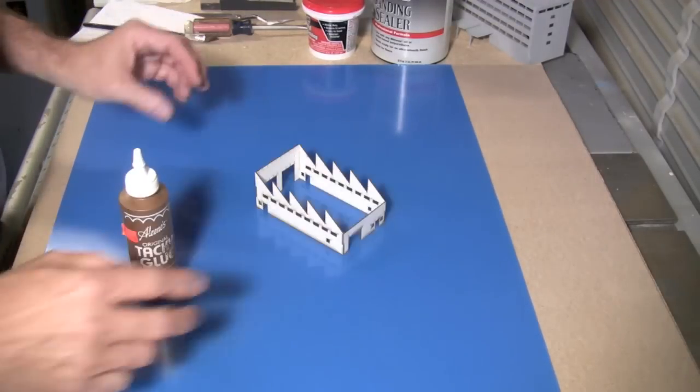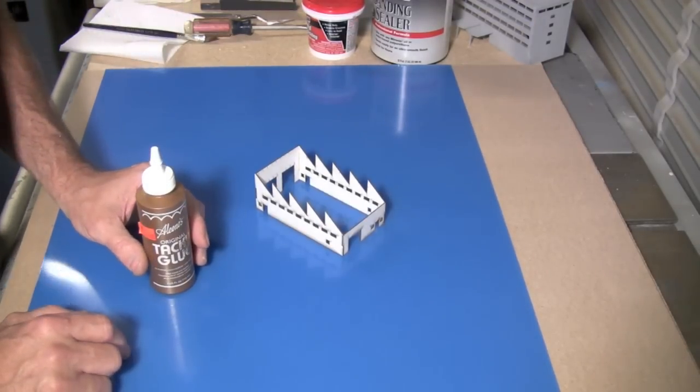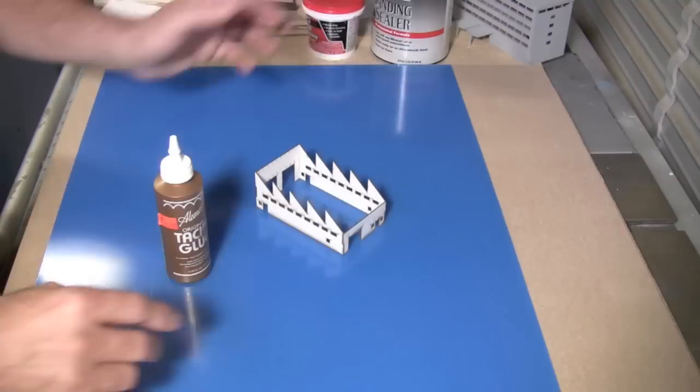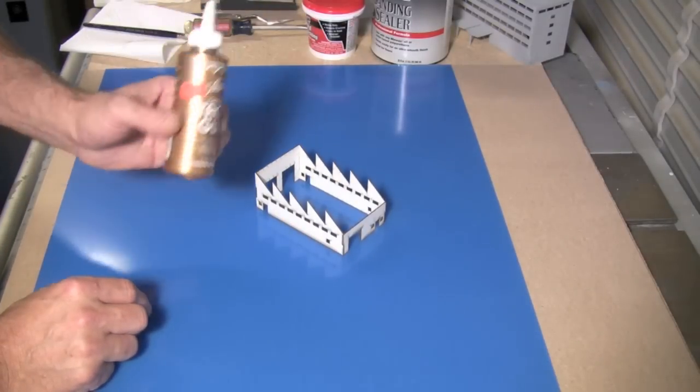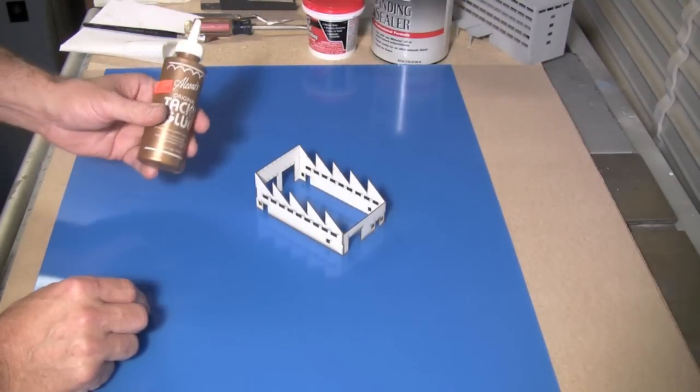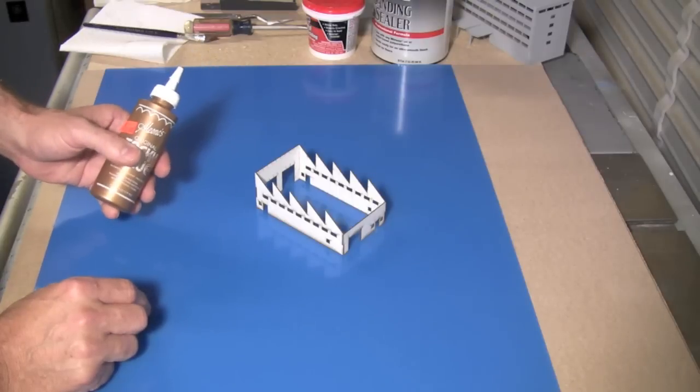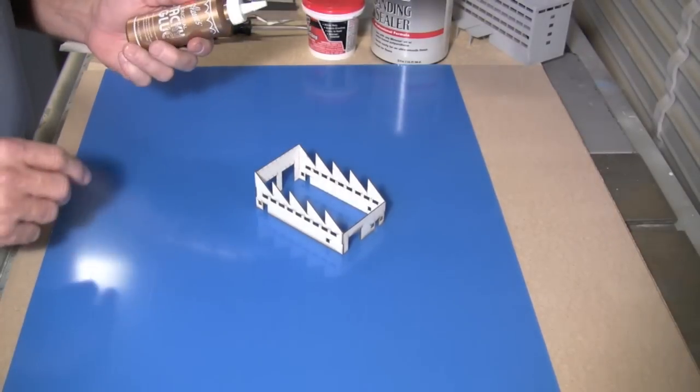You still have to kind of jig things up and get everything squared up real nice, but it makes it a lot easier when your pieces aren't just falling apart after the glue is on. So this kind of holds it together for a few seconds while you get your act together. So that's the first thing I want to tell you about.